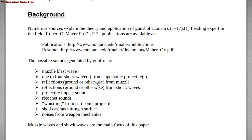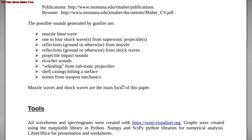Other sounds generated from gunfire include reflections of the muzzle wave, reflections of the shock wave, projectiles hitting objects, and ricochet sounds. If it's not a supersonic projectile — fired from a pistol that's not supersonic, or a rifle over a very long distance where the bullet has slowed to subsonic — you might hear whistling as the bullet goes by, a very common sound during the Civil War era. Shell casings hitting objects can also make sounds, as can the mechanics of the weapon if you're close enough.